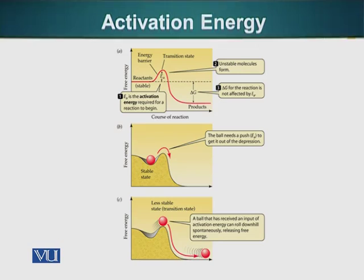This ball has to be provided a small amount of energy in order to go over the hump — that is the activation energy. Our reactants are at a specific energy level and the products are at a lower level. However, the reactants have to go to a transition state level, which is an even higher energy level.